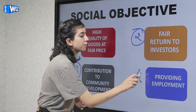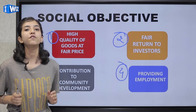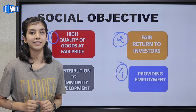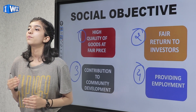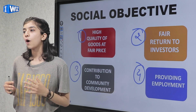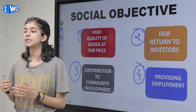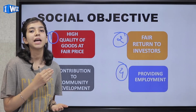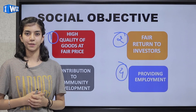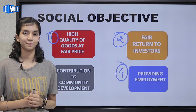The fourth social objective is providing employment. Employment is a major problem in our society these days. It is the moral duty of the business to create employment opportunities for both skilled and unskilled people, as well as youth and disabled people.